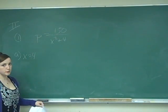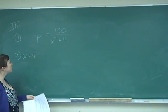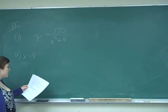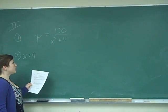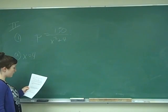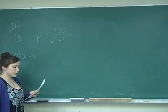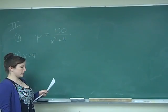Question number one on part two, the longer response part, says the demand for a certain commodity is given by P equals 150 over X squared plus 4, where P is the price per bushel and X is the number of bushels in millions sold each year.